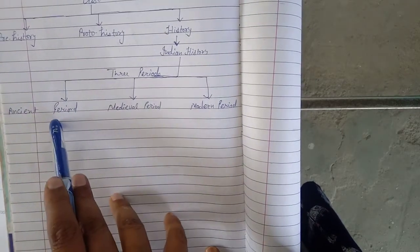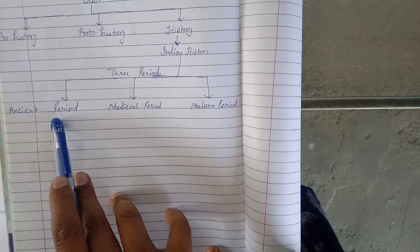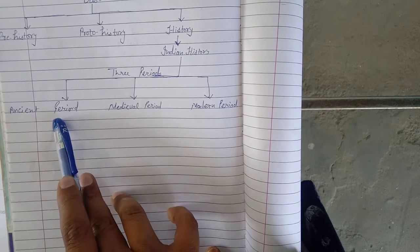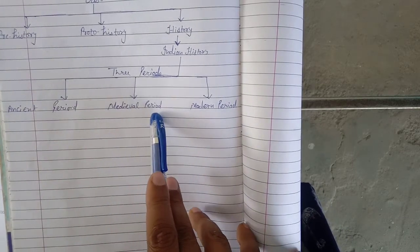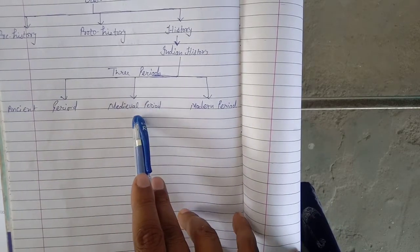Ancient period means that it was very old. Medieval period means the middle ages.